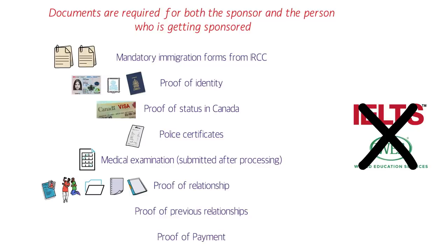Basically, from all these documents, you need to convince the immigration officer that the marriage was a legal, valid marriage and not a marriage for the sake of getting permanent residency. If there were any previous relationships — for example, an earlier marriage followed by divorce — you should furnish those documents as well. You also need to include proof of payment, done online, with the receipt printout placed in the application package. Overall it will be a big, heavy bundle of papers that needs to be sent to a particular location in Canada by trusted courier.